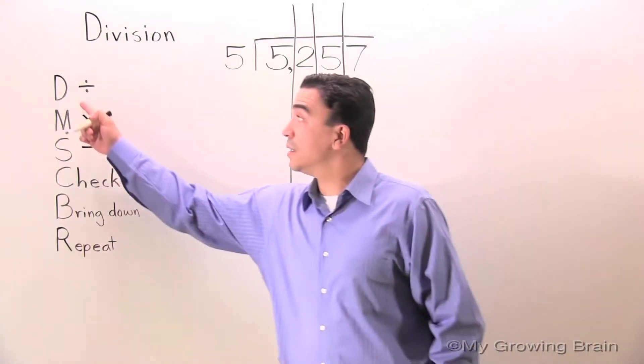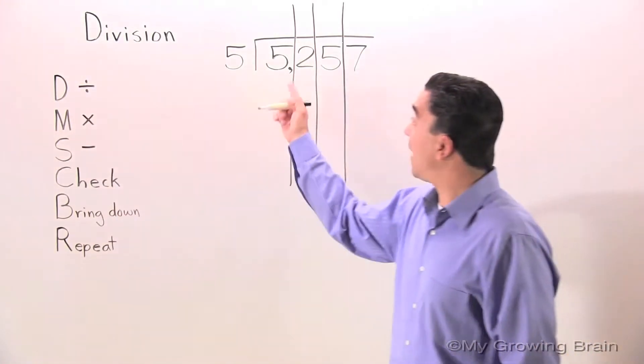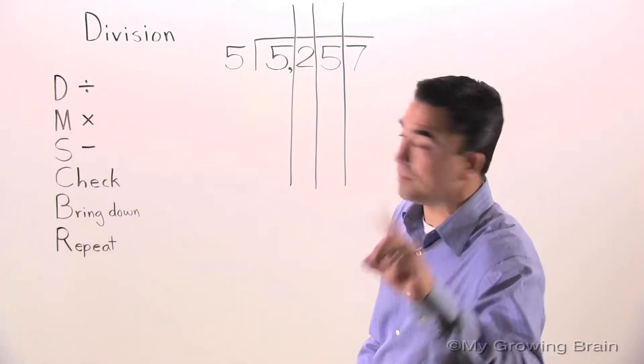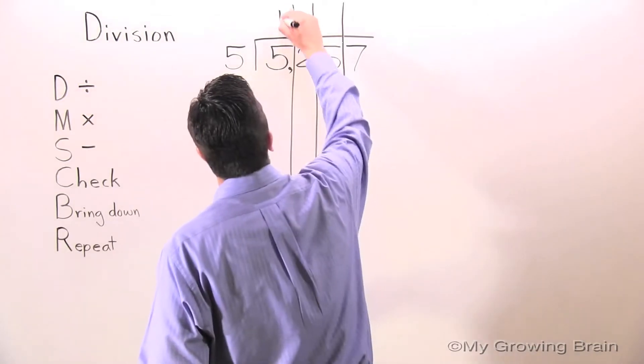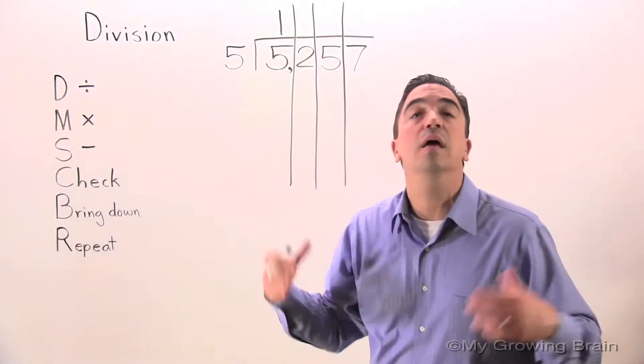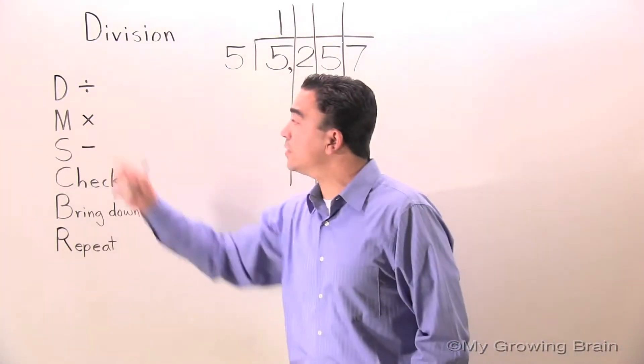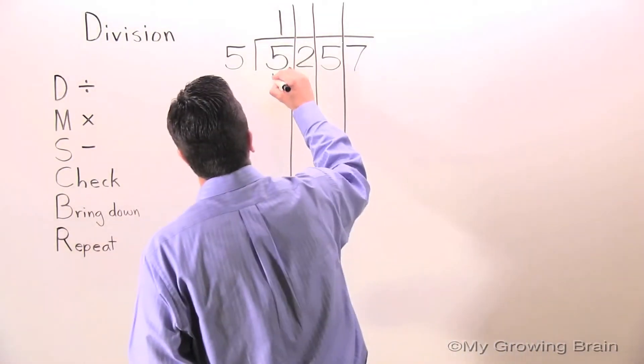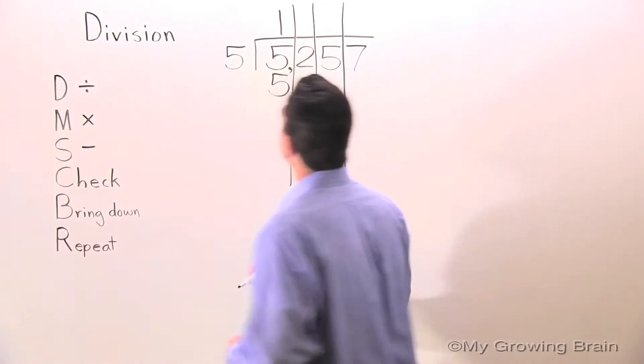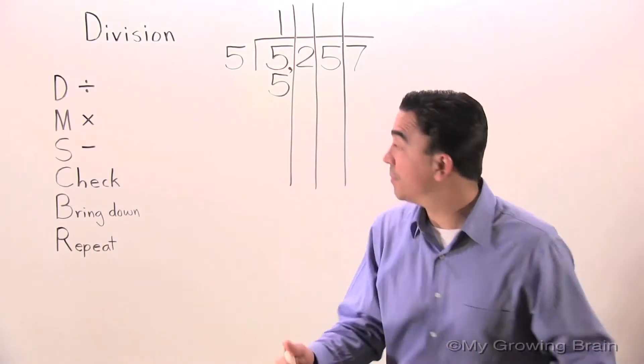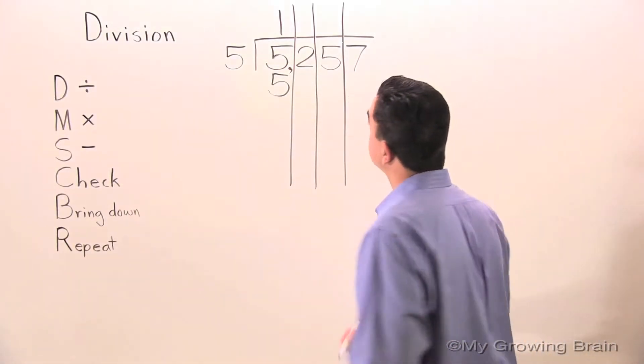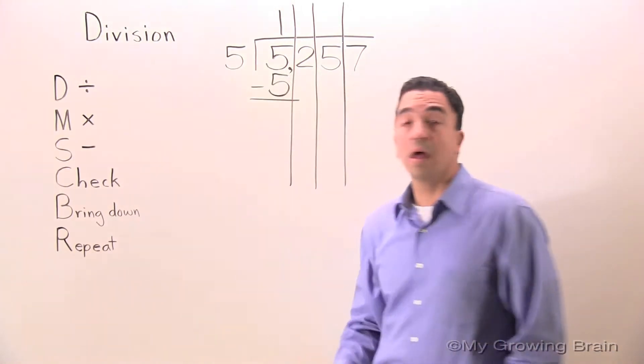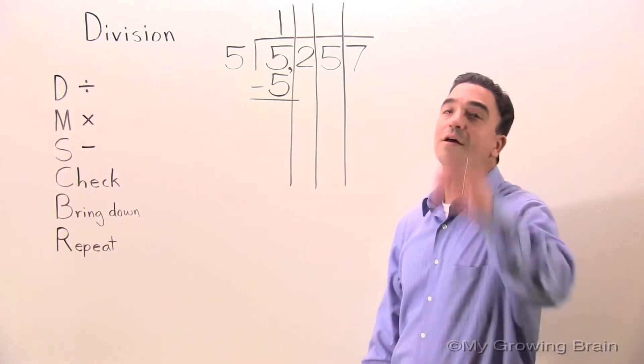First step, divide: 5 divided by 5, or 5 into 5, one time. Next step, multiply: 5 times 1 is 5. Next step, subtract: 5 minus 5 is 0.